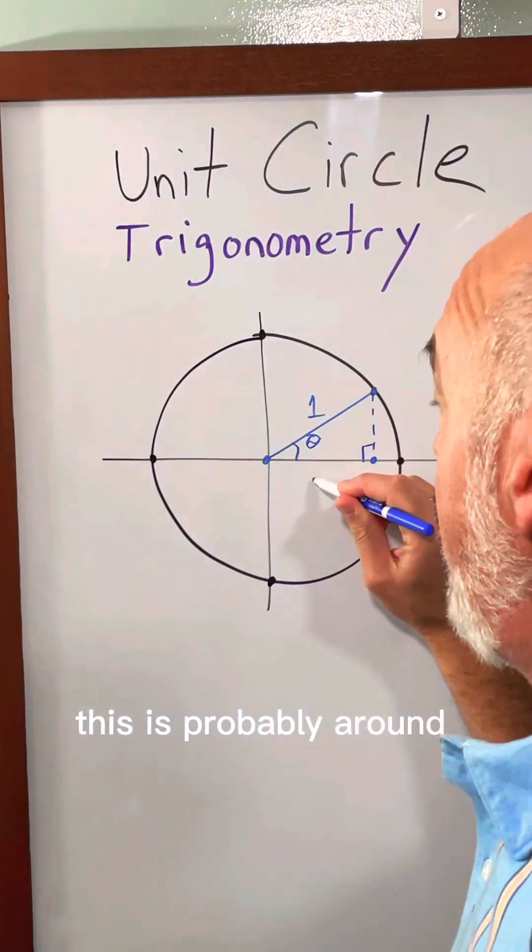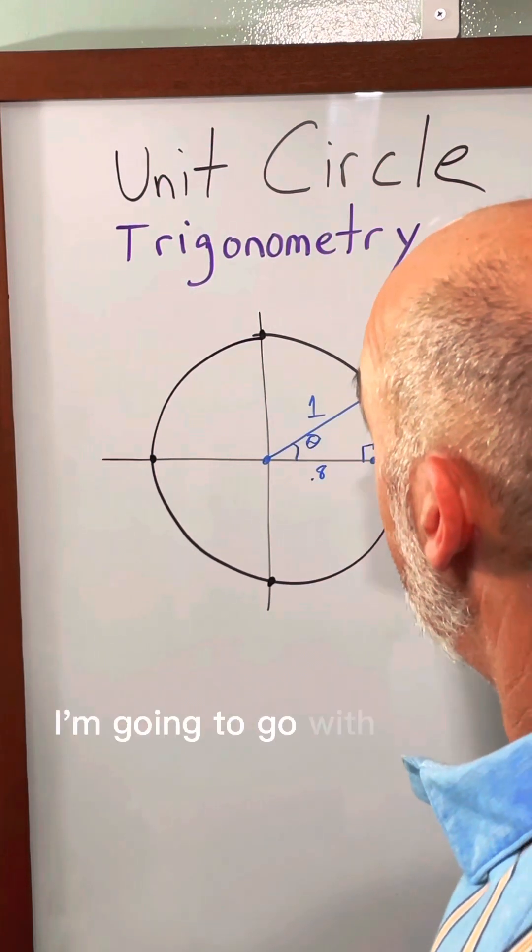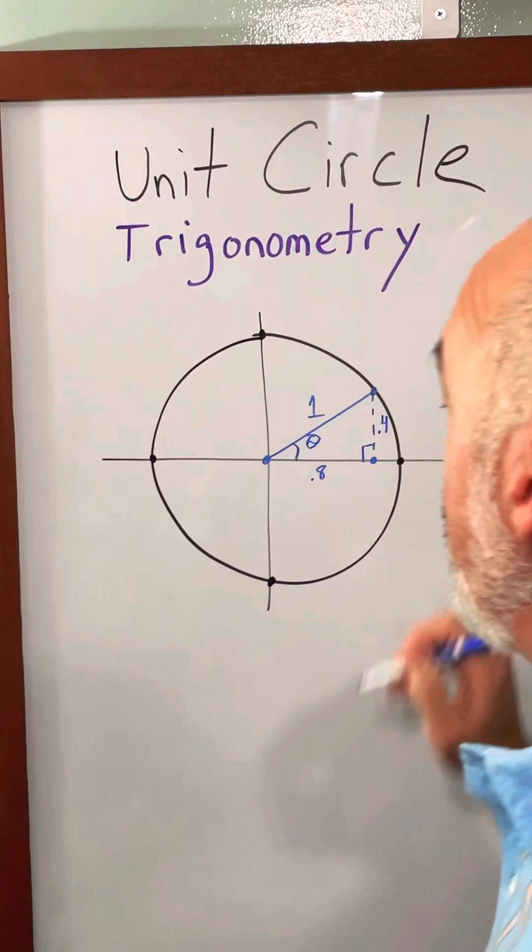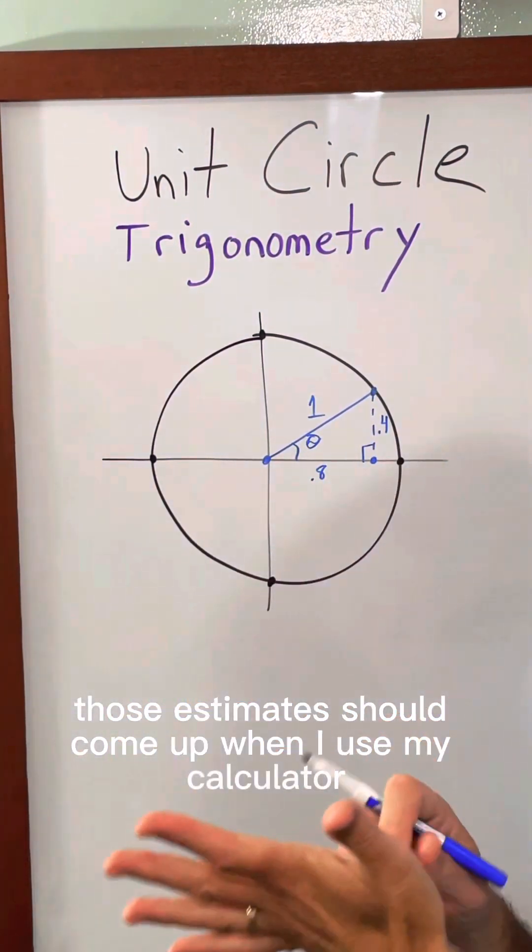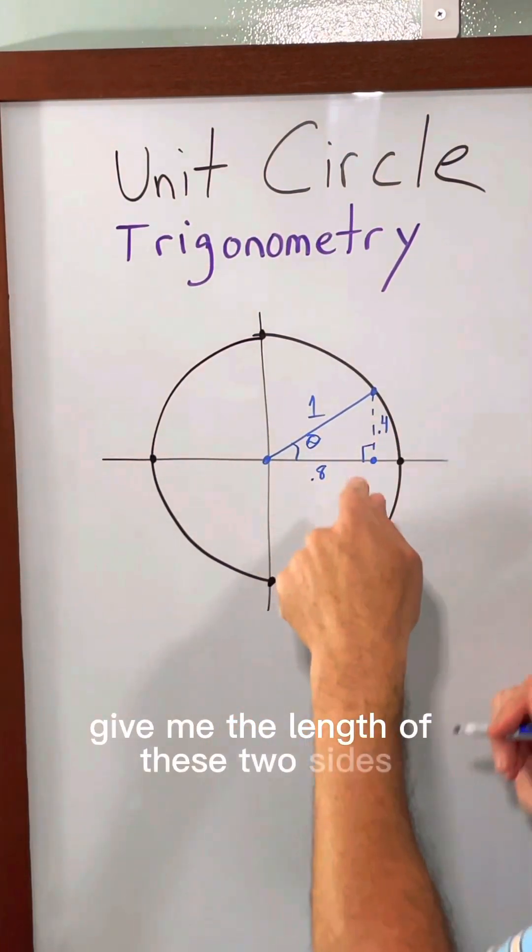This is probably around 0.8 maybe and this looks like about half that size. I'm going to go with about 0.4. Those estimates should come up when I use my calculator to figure out the sine and cosine. That's giving me the length of these two sides.